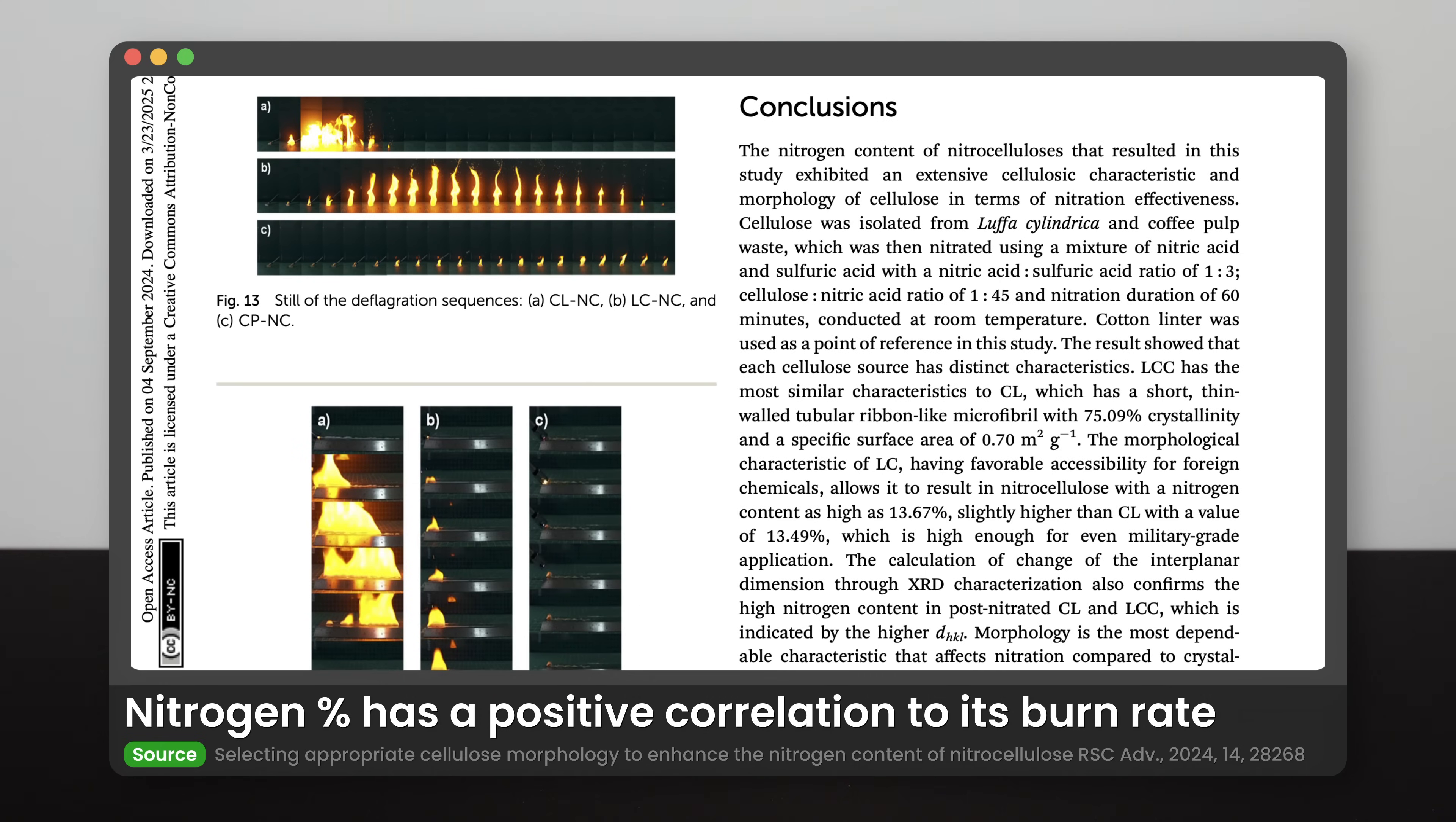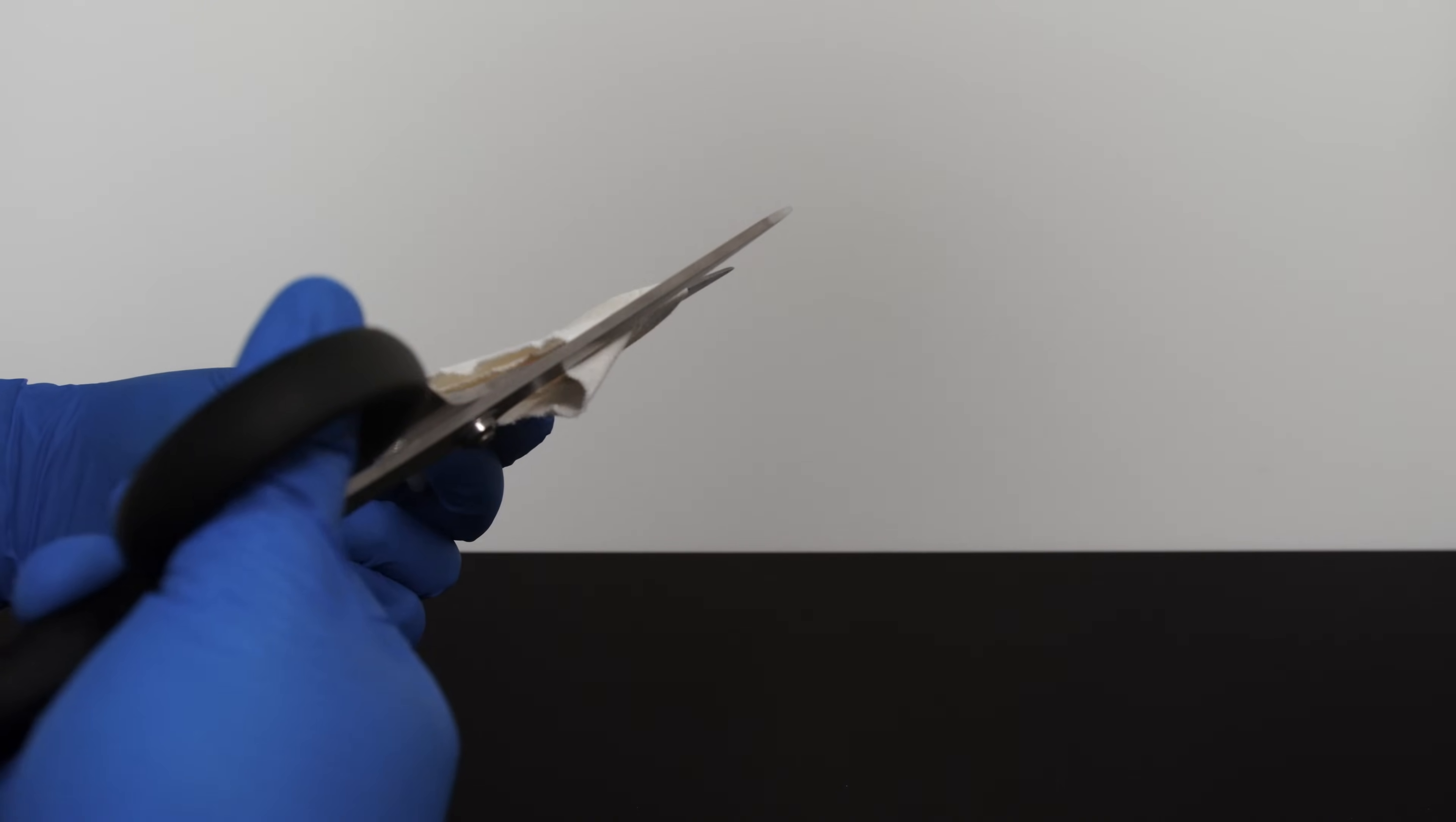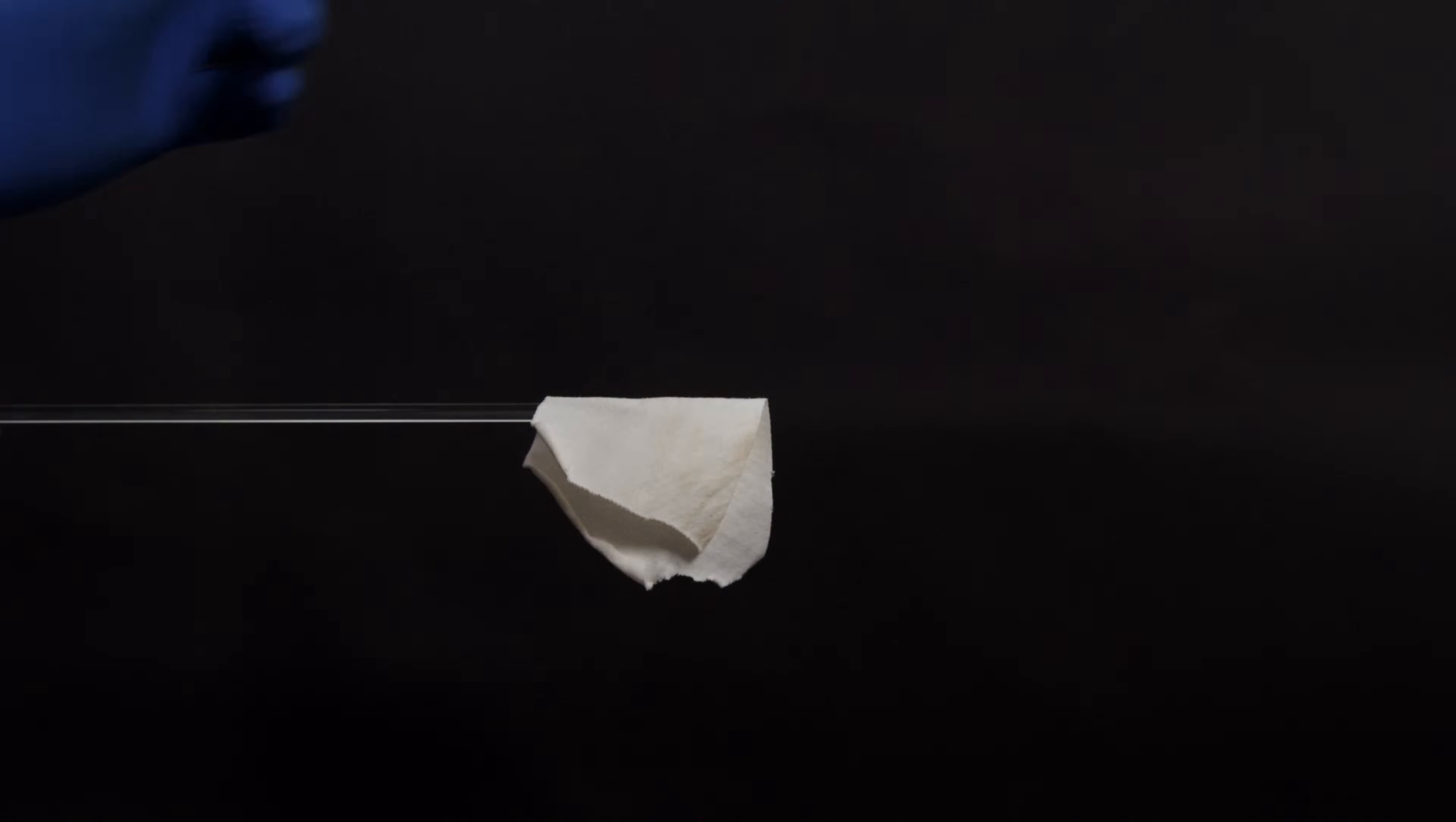For now, we can evaluate the nitrocellulose based on its burning performance. Burning the whole piece at once could set something on fire, so let me just cut a small piece of nitro panties and test it out. As you can see, it burns very quickly and leaves almost no residue.